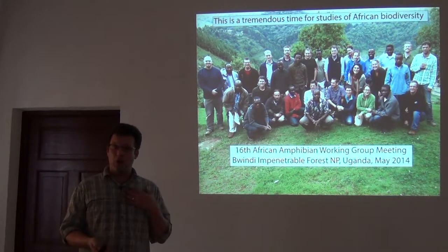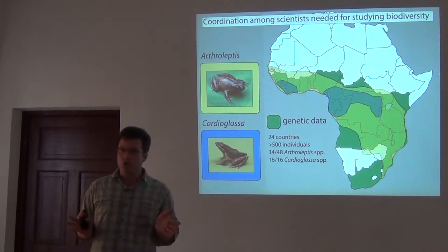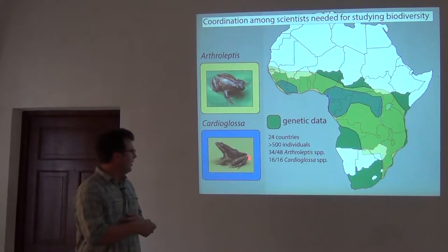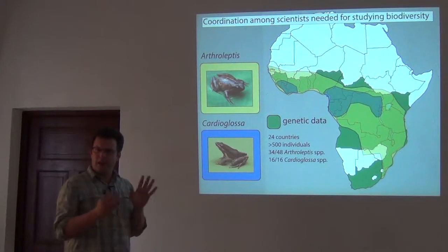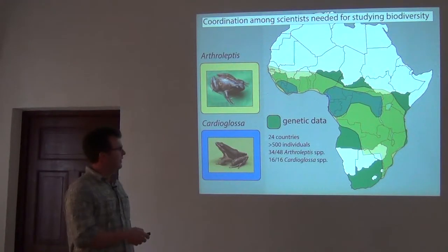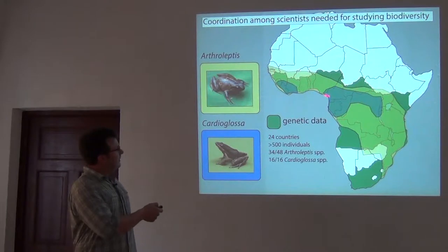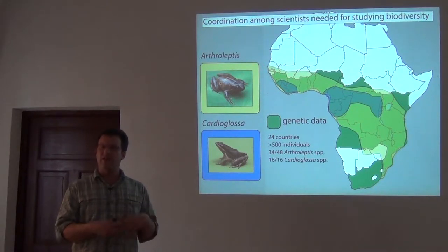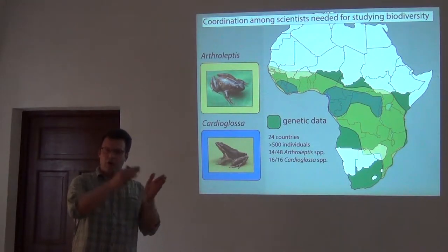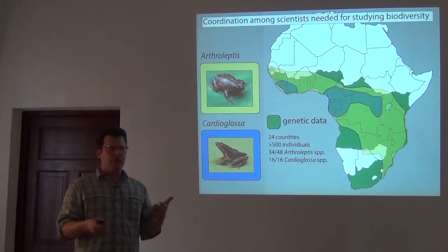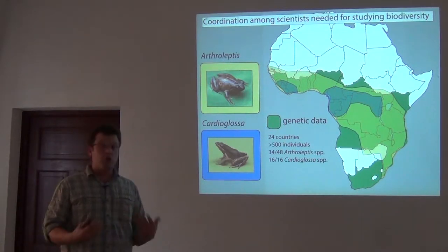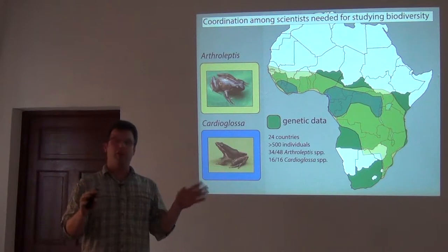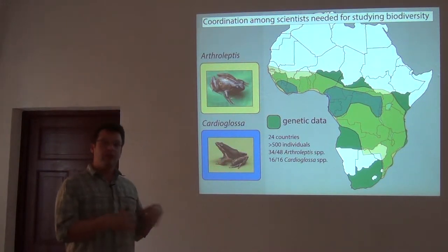Just to give you an idea of how this plays into my own work — this is for two genera of frogs: Arthroleptus, which are little brown frogs, and Cardioglossa, which look like poison dart frogs and are very colorful. Cameroon is really the center of their diversity. For these two genera, we now have projects where we can have sampling for 24 or 25 countries just for tissue samples, not counting museum vouchers.